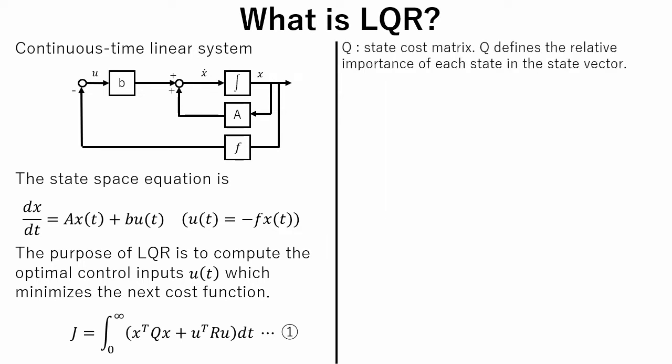In this cost function, Q is called state cost matrix. Q defines the relative importance of each state in the state vector.